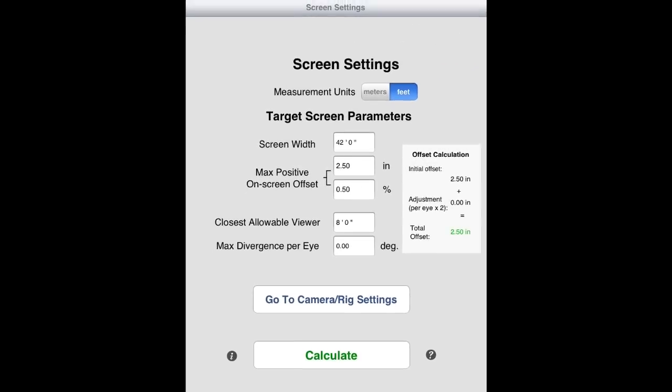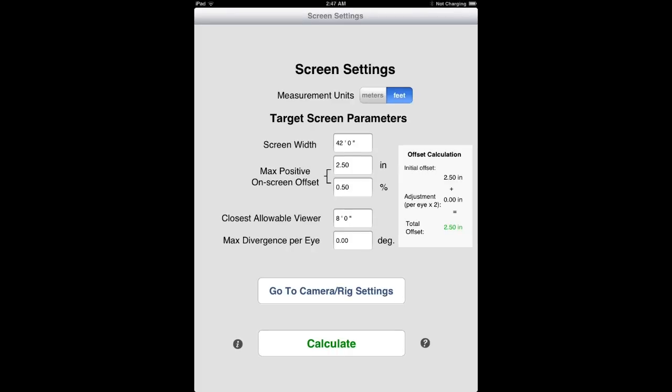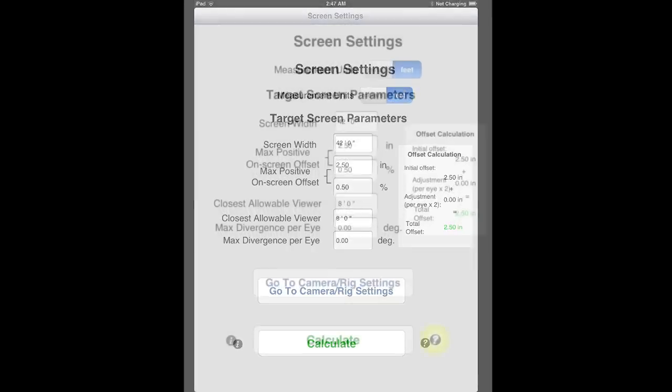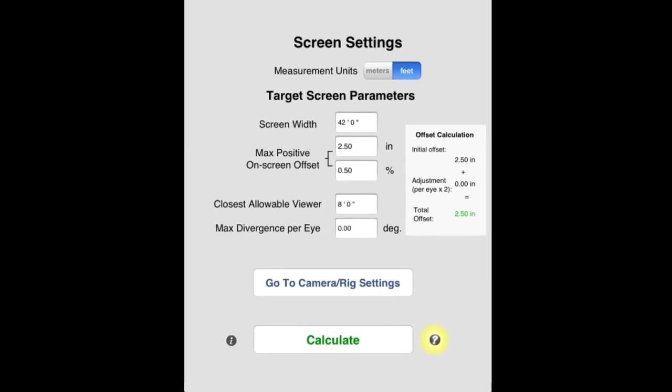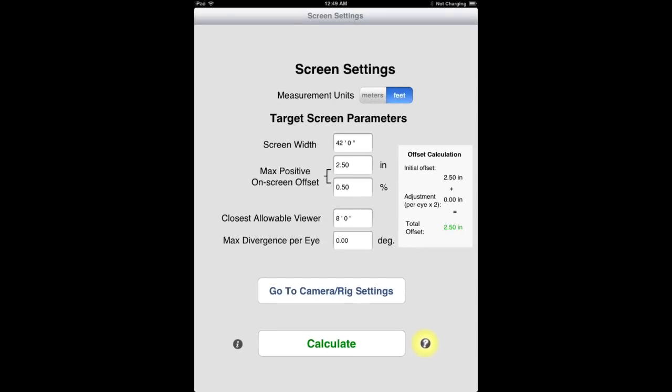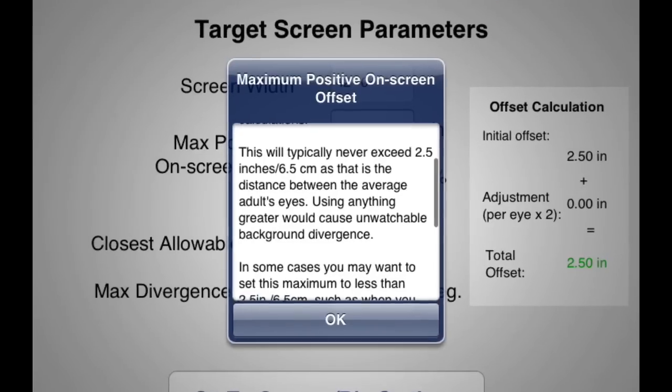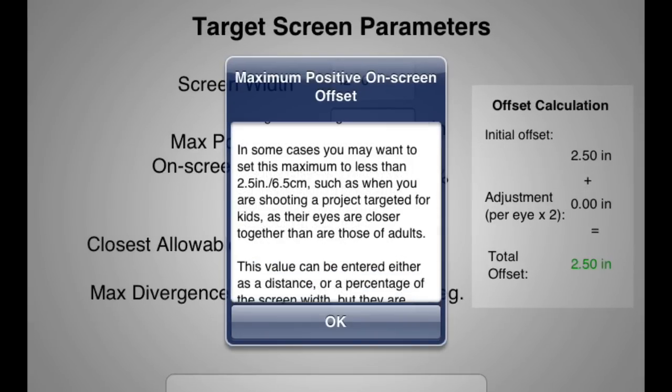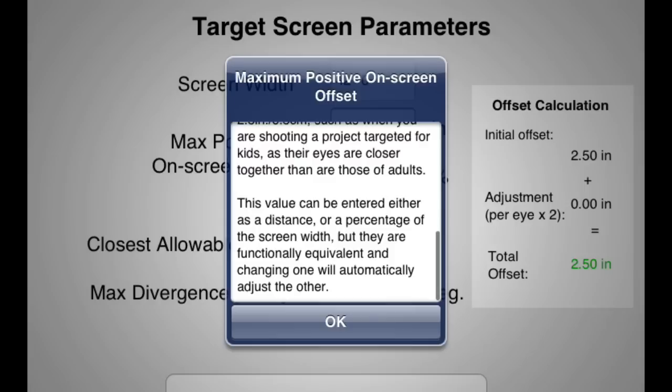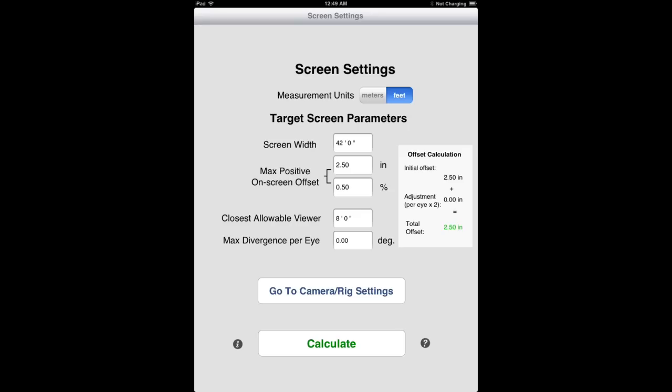If you ever have questions about how to use this app, then context-sensitive help is always available right at your fingertips. Simply tap the hint button, which is found on virtually all of the calculator screens, and then tap the control or field that you want more information about. As you can see, the help typically describes not only what the field or control does, but when you might want to use it and considerations to be aware of.